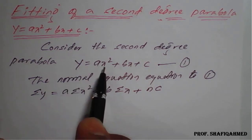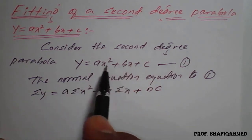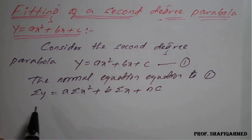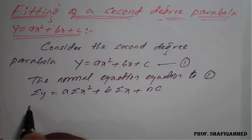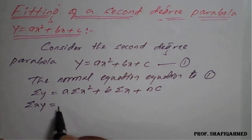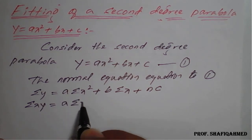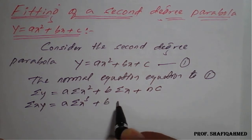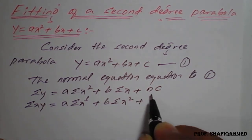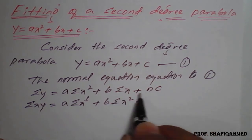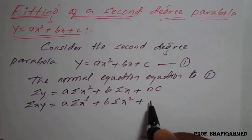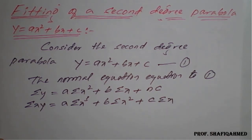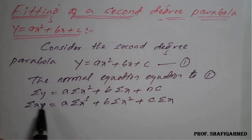Here y is dependent, and x as well as x² are both independent variables. First, we multiply x on both sides. So: summation(xy) = a·(summation x³) + b·(summation x²) + c·(summation x). Since x is a variable, we remove n and write c times summation x. This gives us the second normal equation.